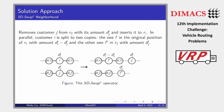The SDSwapStar operator is a split adaptation of SwapStar, first proposed in this work. Let's look at an example. Assume I and J are two customers in different routes. Our operator removes J from route 2 with its amount and inserts it into route 1. In parallel, customer I is split into two copies: one in the original position with amount d_i' minus d_j', and the other in route 2 with amount d_j'. J can be inserted to any position of route 1, and the copy of I in route 2 can likewise be placed in any position. The SDSwapStar neighborhood can be explored in O(n²) time using a method similar to Vidal's work, where n is the number of customers.